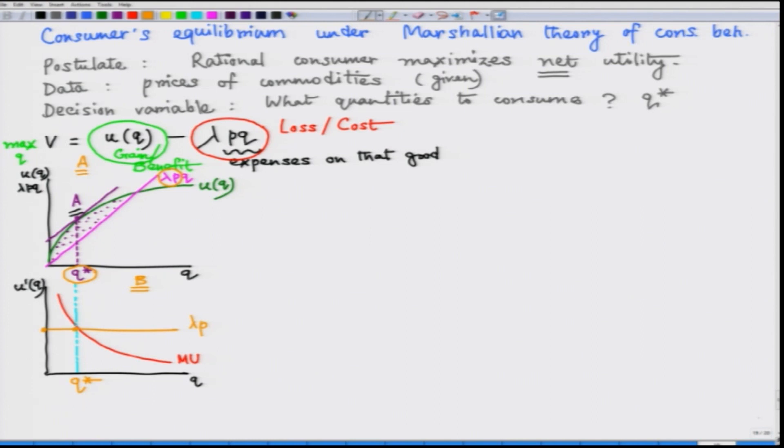Now with this let us also look at how one can derive demand function from the consumer equilibrium condition in Marshall's model. We will start with the mathematical first order condition from this optimization exercise. We have already spoken about the equality of the slope of the total utility function and the loss function. That means we are talking about this first order condition using calculus.